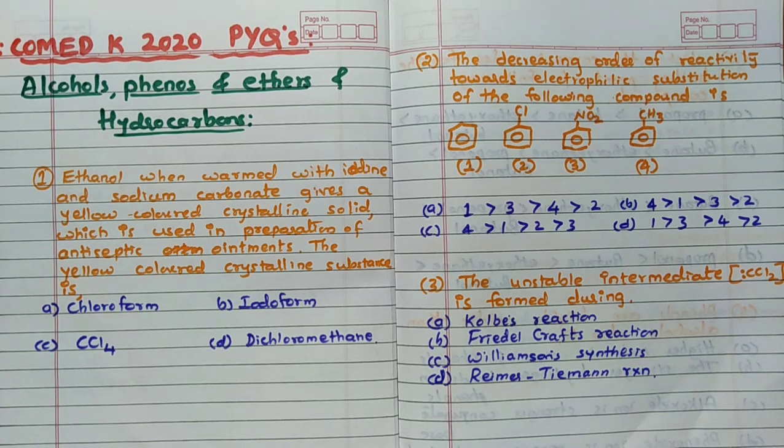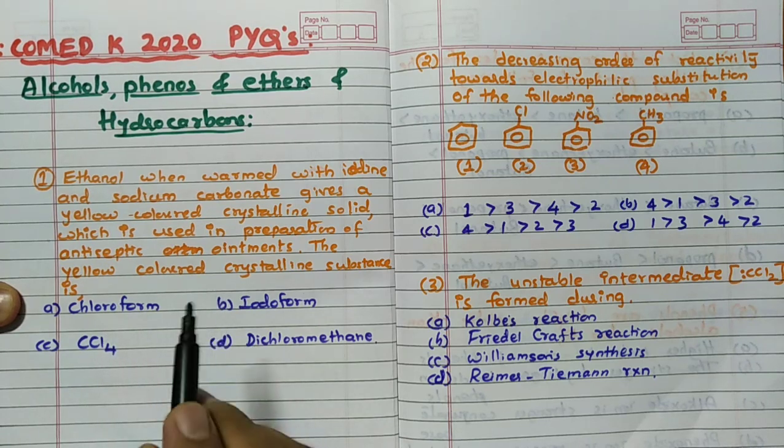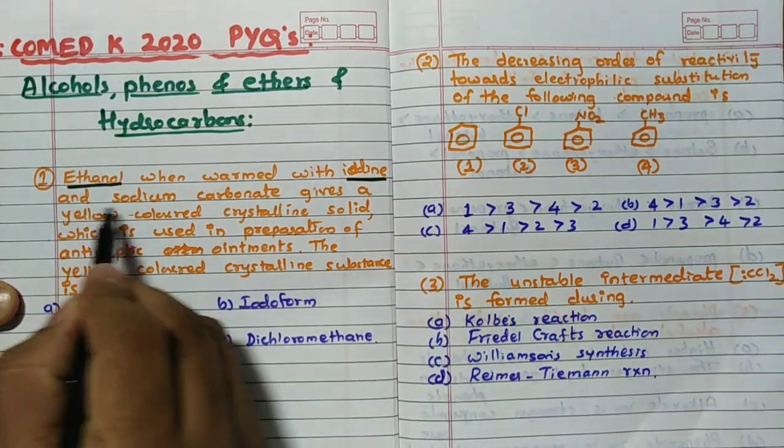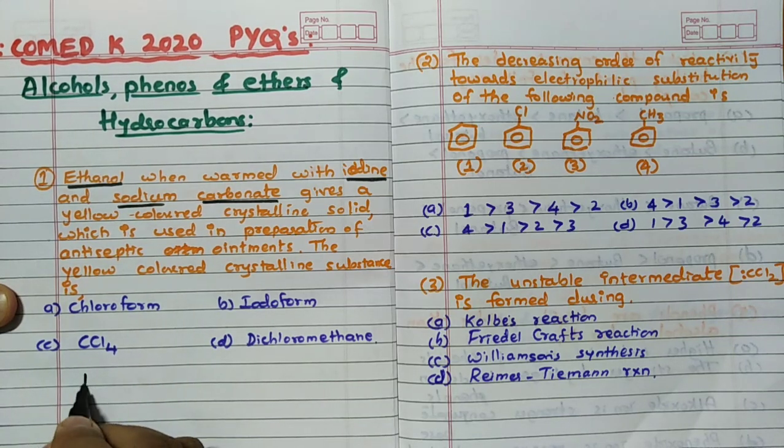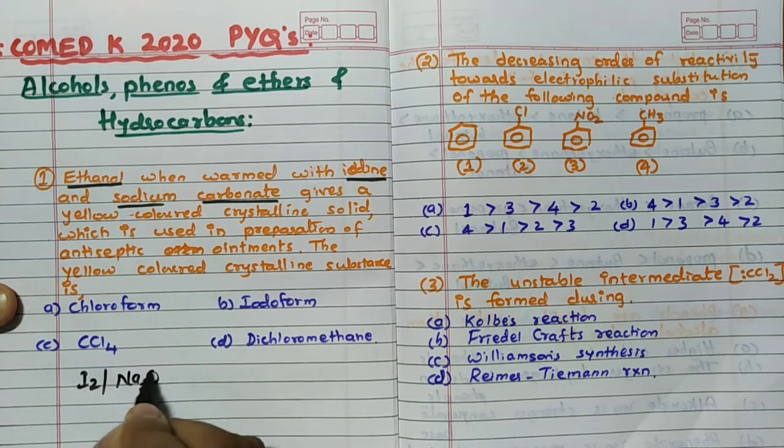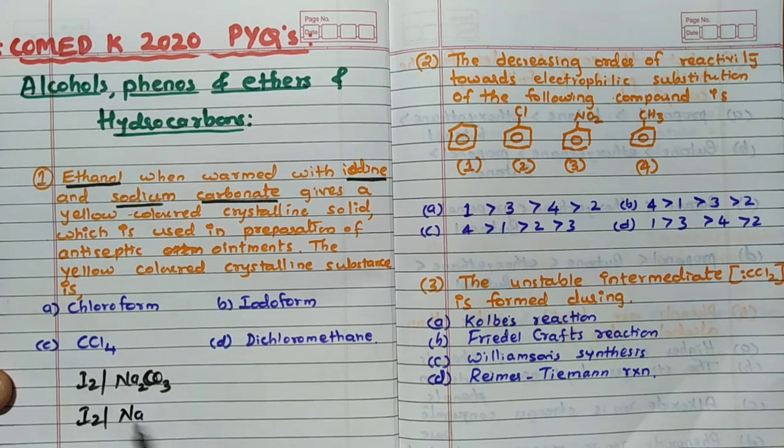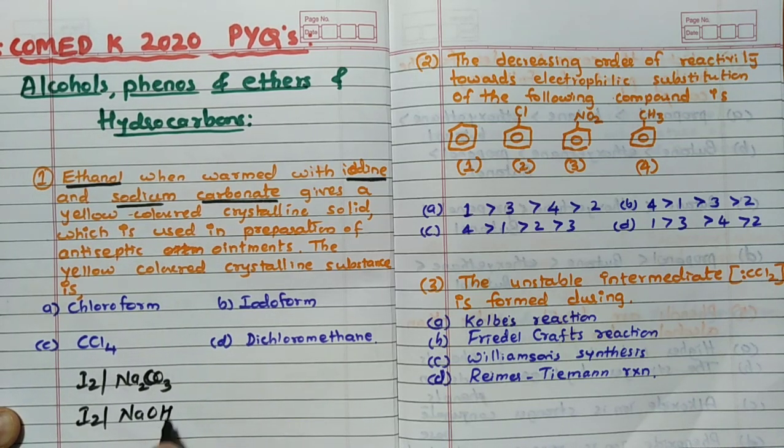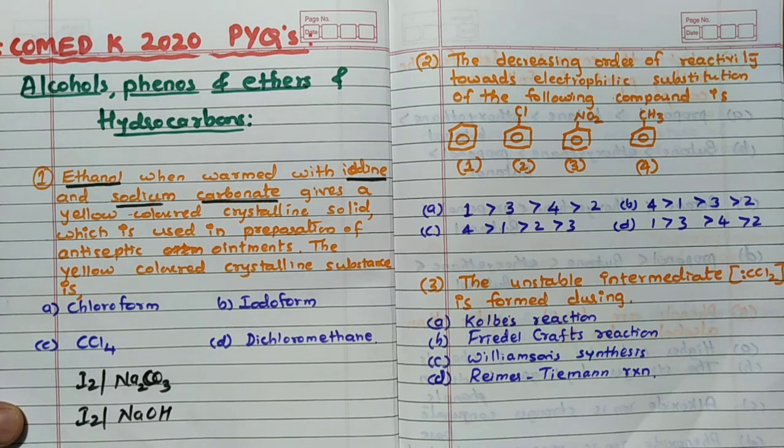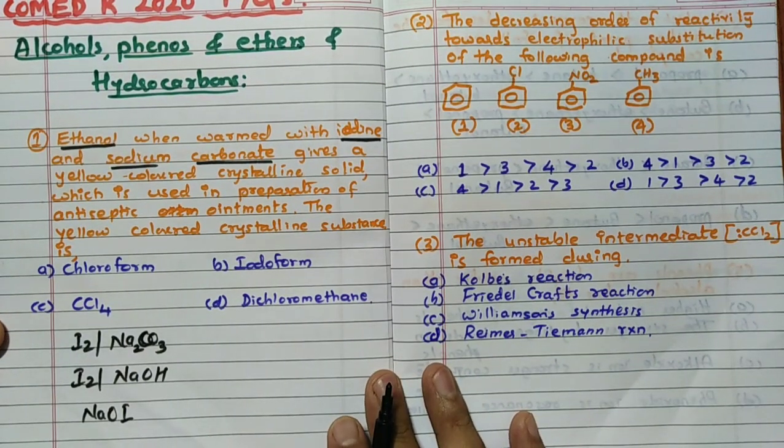Now first one: Ethanol when warmed with iodine and sodium carbonate gives a yellow colored crystalline solid which is used in the preparation of antiseptic ointment. The yellow colored crystalline substance is - remember here whenever the question is like ethanol with iodine and sodium carbonate, iodine in Na2CO3 or iodine in NaOH, such type of NaOI, all these are remember the haloform reagents.